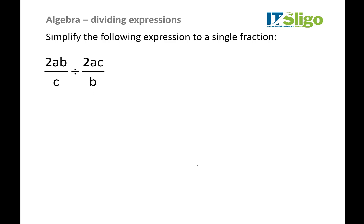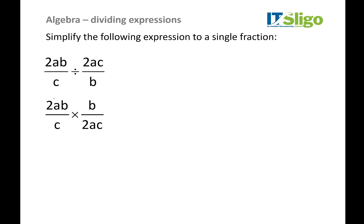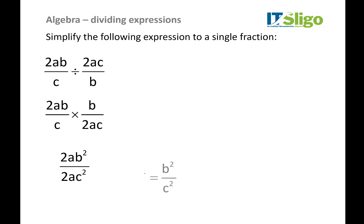Dividing algebraic expressions might look tricky but our rules are still the same. If you had two-thirds divided by one-quarter, you'd flip the second fraction and multiply, then it's top times top and bottom times bottom. The rules are exactly the same here — each letter is just a number. So our first step is to flip the divisor and multiply. Then it's top times top and bottom times bottom, giving 2a times b squared on top and 2a times c squared on the bottom. Notice everything is written alphabetically, which helps with cancellation. We have 2a above and 2a below — they cancel — and we end up with b squared over c squared.